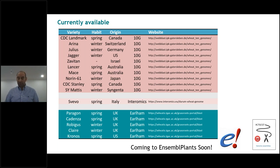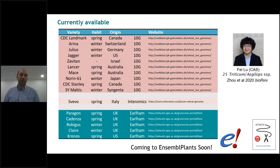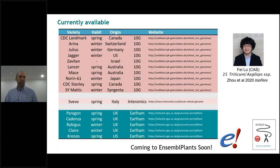All this information is now publicly available — you can blast the information or download the sequence under the Toronto Agreement. Importantly, all of this is being linked back to Ensembl Plants so that when you're working on these new varieties, you can do it very seamlessly through their interface. Very rapidly, you'll be able to say: this is my gene in Chinese Spring — here's all the natural variation at least in these varieties. Also, Fei Lu at the Chinese Academy of Sciences went not just within cultivated wheat but across Aegilops species, sequencing 25 different Triticum and Aegilops species — that work is on bioRxiv now.